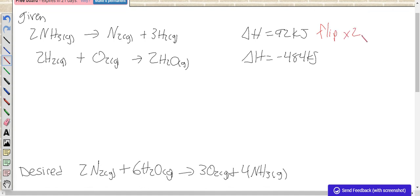So that means we've got 2N2 gas plus 6H2 gas making 4NH3 gas, and what that does to the delta H: since we flipped it, it now becomes negative, and since we times two, we also times two, giving negative 184 kilojoules.